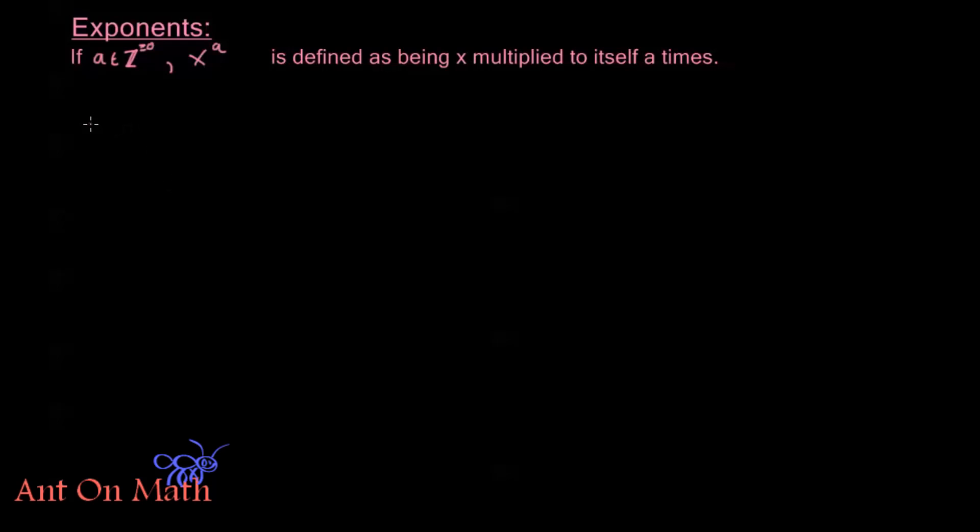In other words, x to the a is equal to x times x times x dot dot dot, times x where I have a total of a x's being multiplied to each other. And this definition is all I'm going to use here. We're going to talk about three important properties that are really going to help us out with the algebra of these exponents.